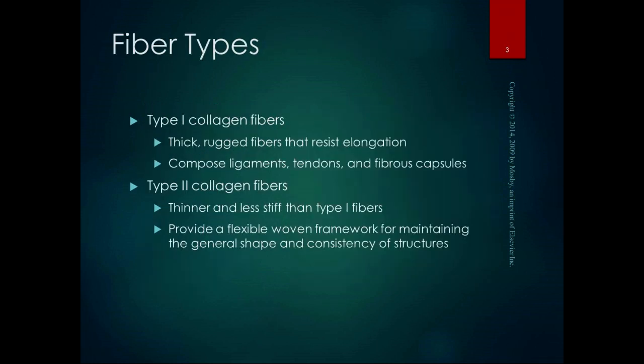The most abundant protein in our body is collagen. We have different types of collagen fibers. Type 1 collagen fibers are tough, thick fibers that resist elongation. We want ligaments and tendons made out of those tough type 1 fibers, because those guys have to pull — they're transmitting the force of the muscle to the bone. The fiber capsules that are keeping our joints congruent, those need to be tough.